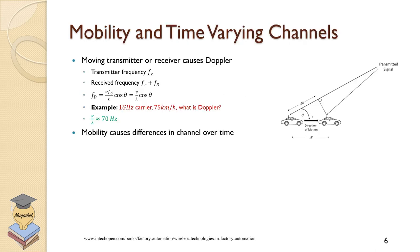Regarding mobility and time-varying channels: earlier we looked at the Doppler effect. If you have a transmitter and receiver moving relative to each other — whether away or towards — we get Doppler. The frequency of the transmitter will be received as frequency plus the Doppler shift, related to wavelength, velocity, and angle. Moving towards gives a positive Doppler; moving away gives a negative Doppler. For example, a car moving at 75 km/h at 1 GHz gives a worst-case Doppler of V over lambda equal to 70 Hz.